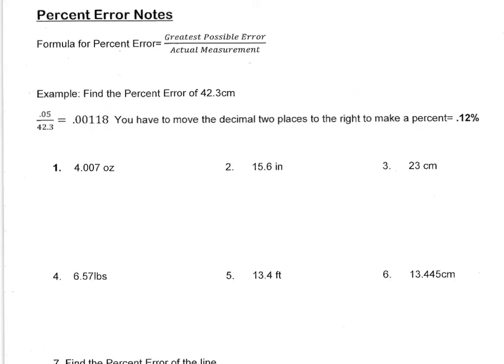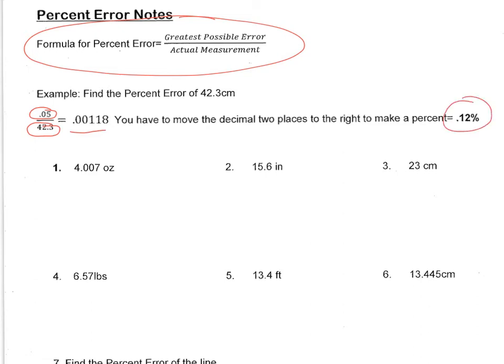So now, how do we find the percent of error? The formula you can see up here: the formula for percent error is the greatest possible error divided by the actual measurement. So we're just going to find the greatest possible error like we just showed you — that's your numerator — and you divide it by whatever the actual measurement was, and you're going to get a decimal. But then you have to change that decimal to a percent by moving the decimal two places to the right. So let's take a look at some examples.